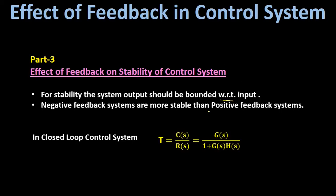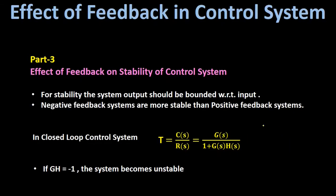In a closed-loop control system with negative feedback, the overall transfer function T is equal to G(s) divided by 1 plus G(s)·H(s). If we put G(s)·H(s) equal to minus 1, then the overall transfer function T becomes infinite, and therefore the output response also becomes infinite, making the system unstable. To keep the system stable, we must keep the product G·H greater than 0.